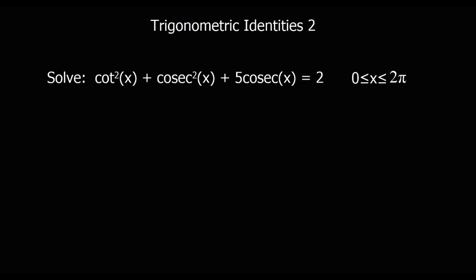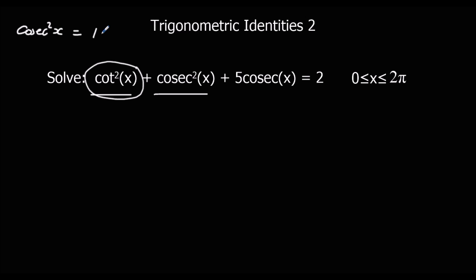Here we've got a slightly harder question: cot²x + cosec²x + 5 cosec x = 2. The difference here is we've got two squared terms: cot²x and cosec²x. We've got to decide which one to get rid of. Because there's an extra cosec x term, we want to make the whole question in terms of cosec — so we're going to get rid of cot using cosec²x = 1 + cot²x, which means cosec²x − 1 = cot²x.